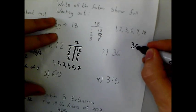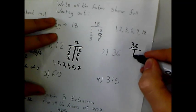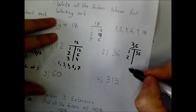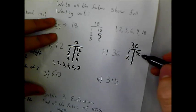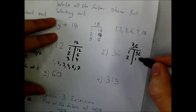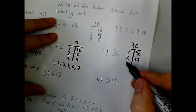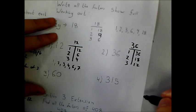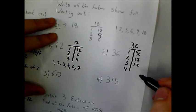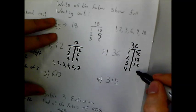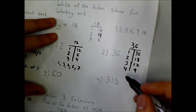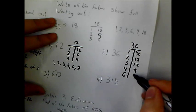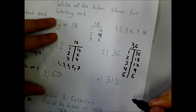Let's look at 36. So start with 1 and 36. 2 goes into 36, and that goes in 18 times. 3 goes into 36, and that goes in 12 times. 4 goes into 36, 9 times. 5 doesn't go into 36. 6 goes into 36, 6 times.